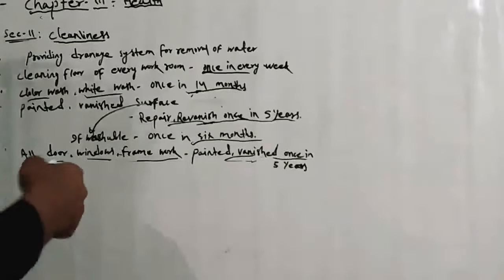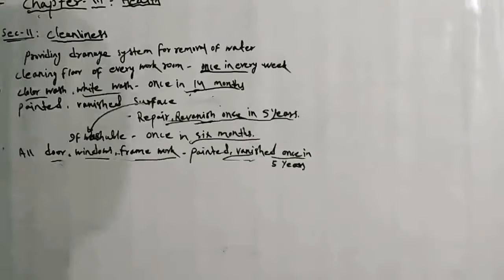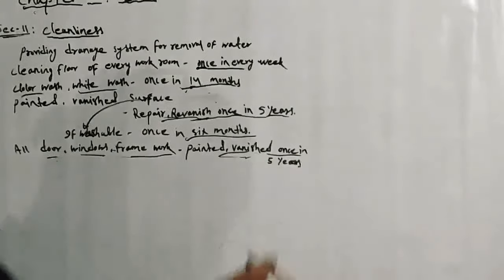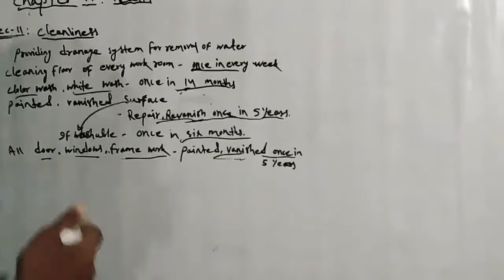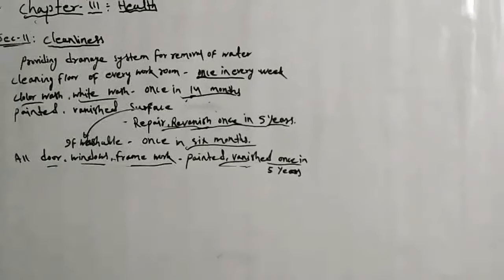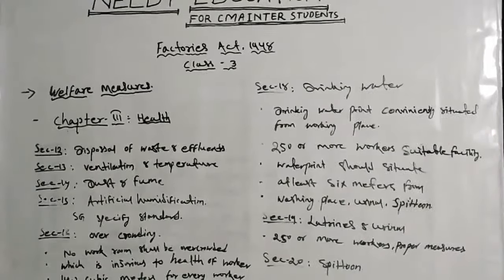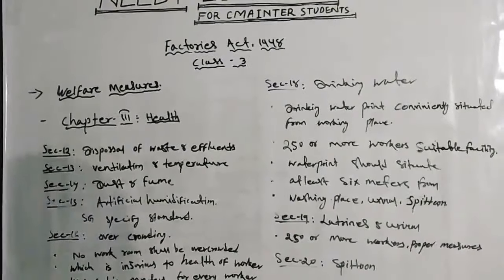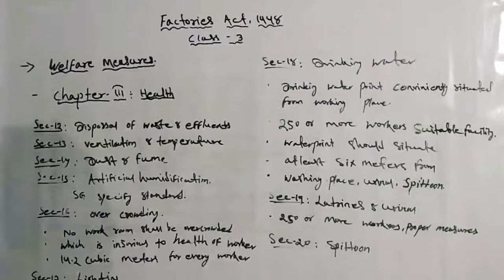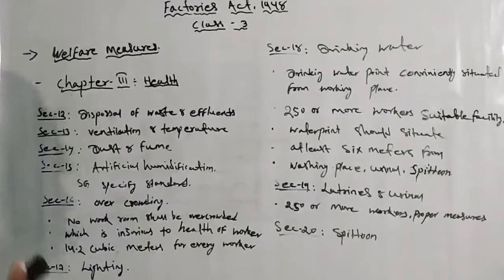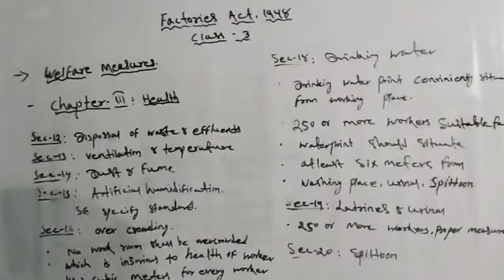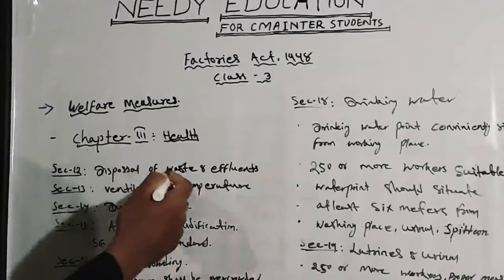Factory me door, windows, framework hai, usko paint karna chahiye — once in five years. So that covers cleanness under Section 11. Next is Section 12: Disposal of Waste and Effluent. Factory me jo waste nikalta hai, uske liye proper measures lene chahiye. Occupier of the factory ko proper measures lene chahiye waste disposal ke liye.